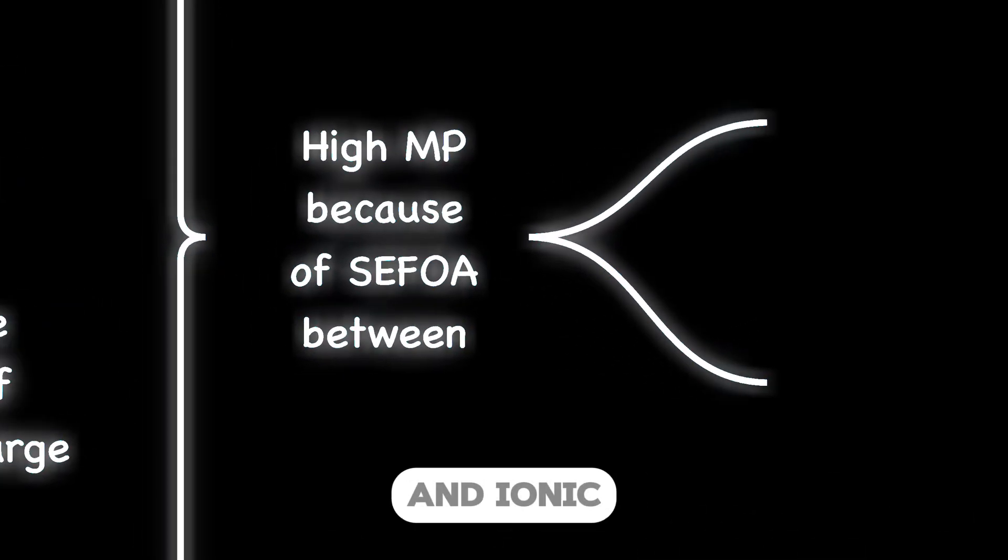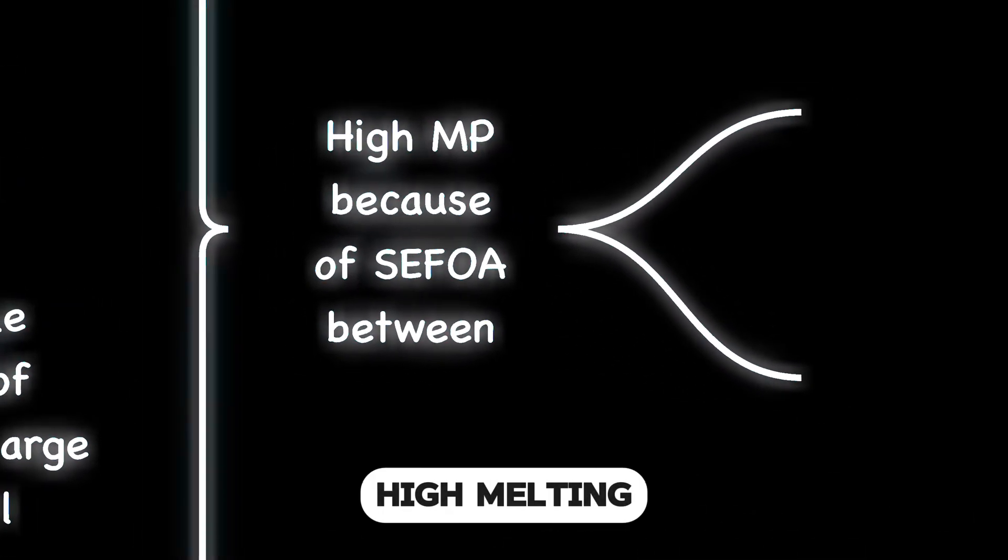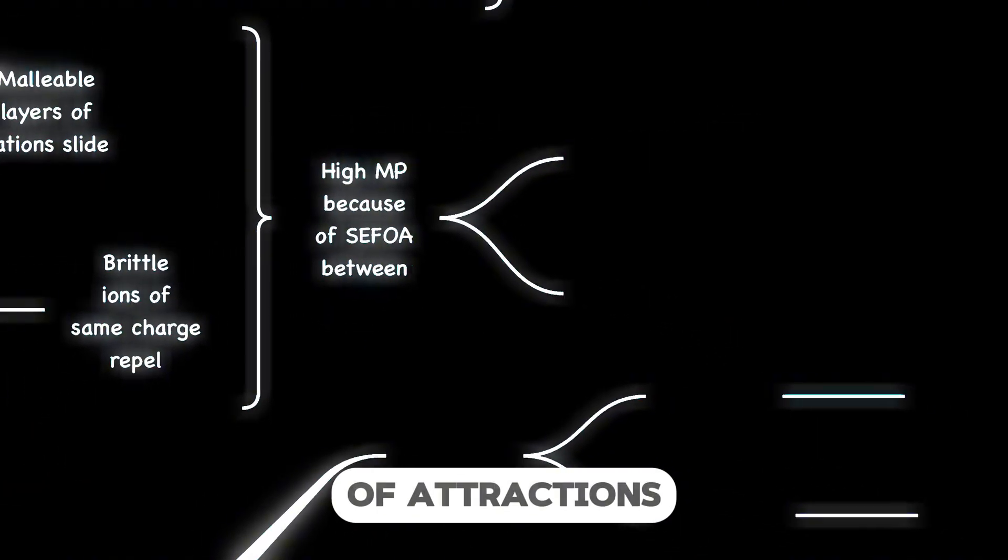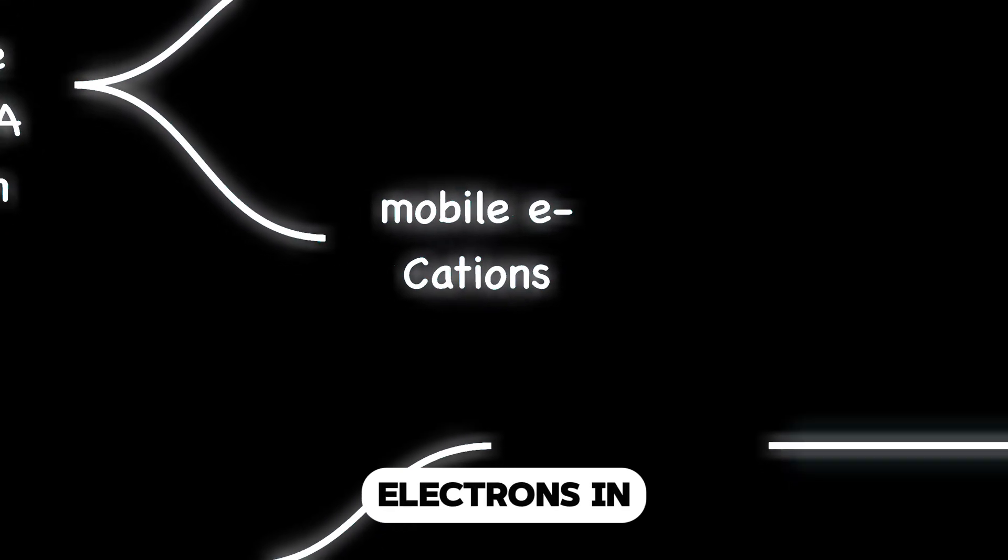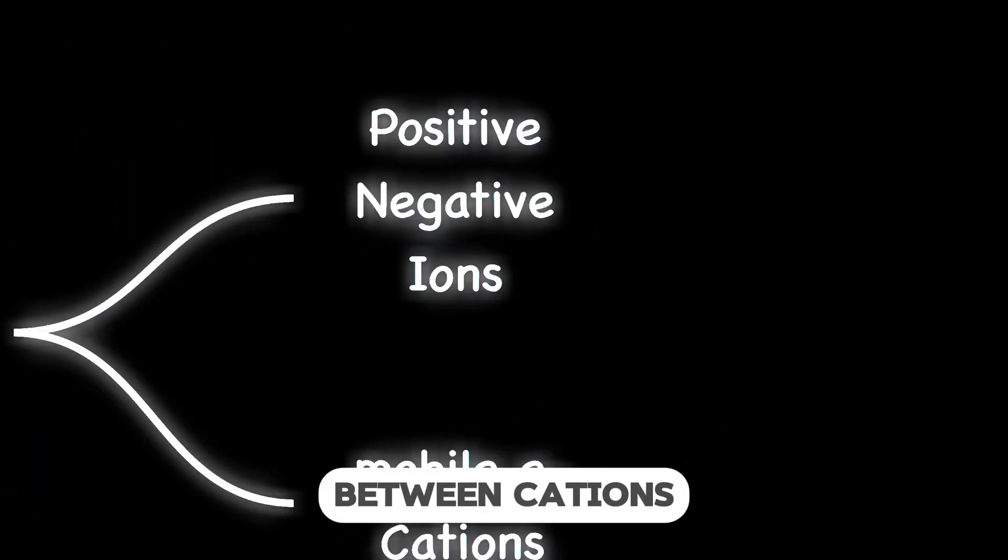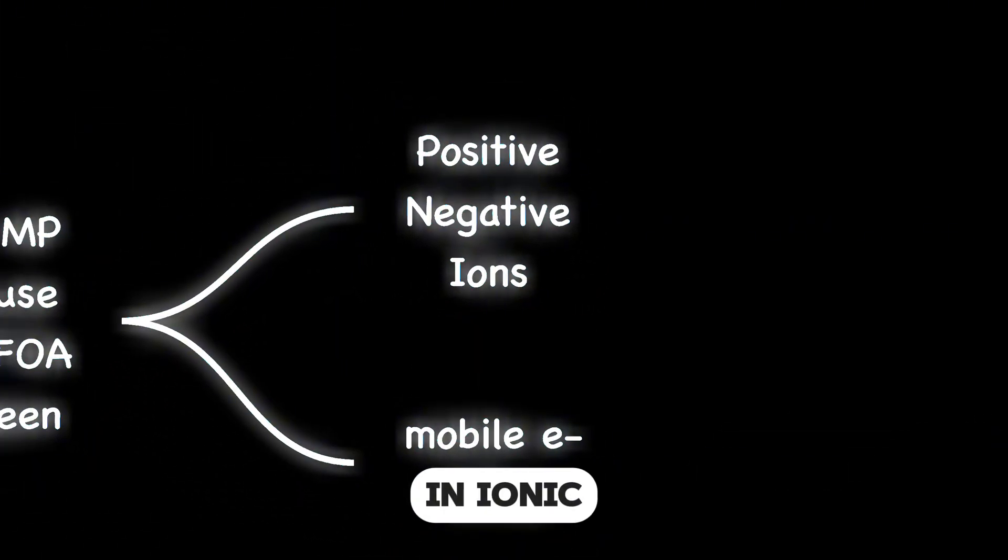Both metals and ionic compounds have high melting points due to the strong electrostatic force of attraction. These forces of attraction occur between cations and anions and mobile electrons in metals, and occur between cations and anions in ionic compounds.